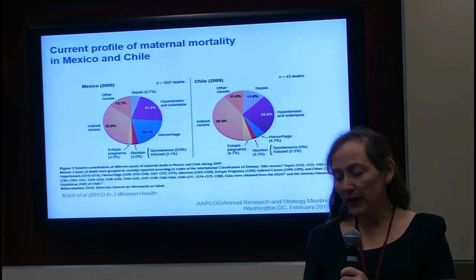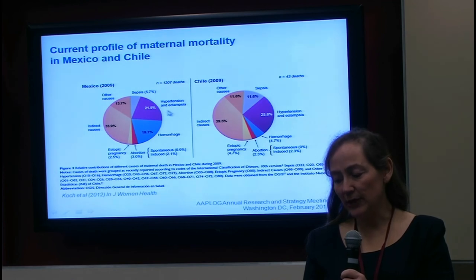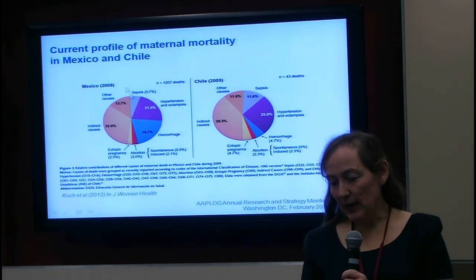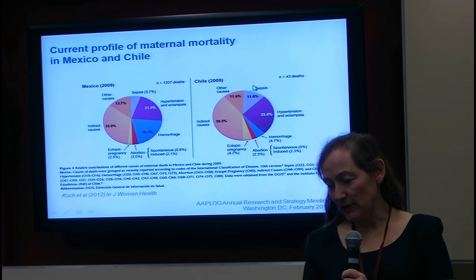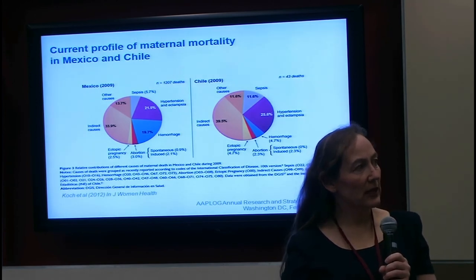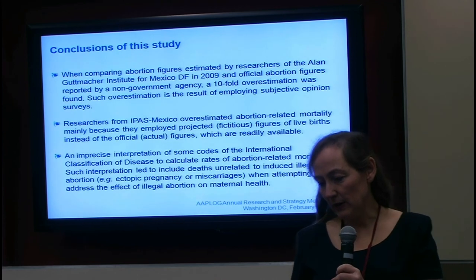Interestingly, the current profile of maternal mortality in Mexico and Chile from 2009 shows that in Mexico the largest contribution to maternal mortality is hypertension and eclampsia, followed by hemorrhage, while abortion-related mortality accounts for only 3%. In Chile, the profile is very similar — hypertension and eclampsia account for about a fourth, followed by sepsis — and abortion accounts for only 2.3%. So unsafe abortion is not a major causal factor of maternal mortality in either country, although that was the justification for legalization of abortion in Mexico in 2007.